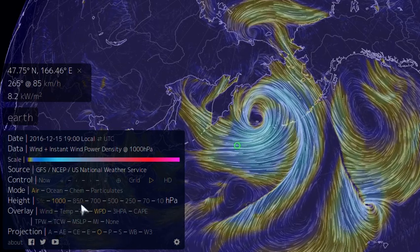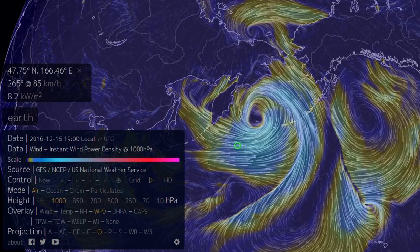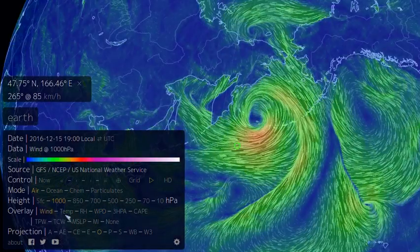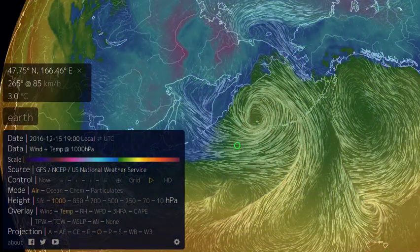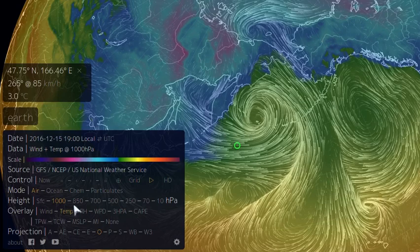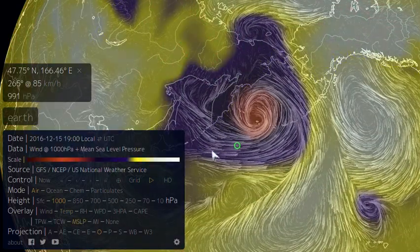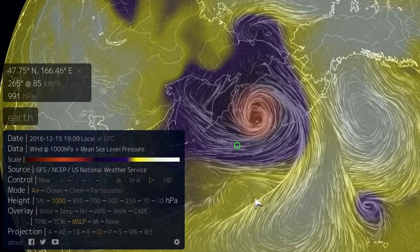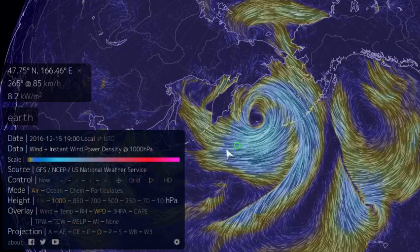For example, we have the pressure here in hectopascals going up. We have the wind velocity. We also have the temperature going up at various levels in the atmosphere, and the mean sea level pressure as well. So we have all the information needed to calculate the instantaneous wind power density.